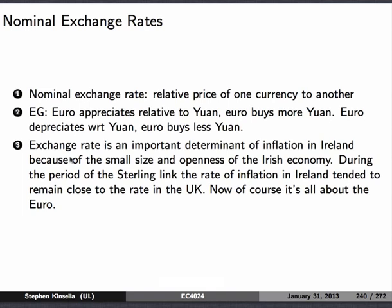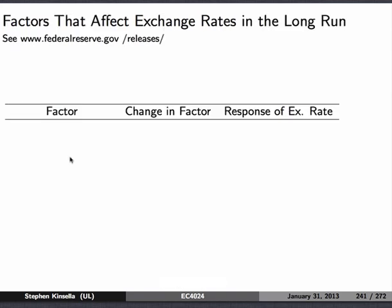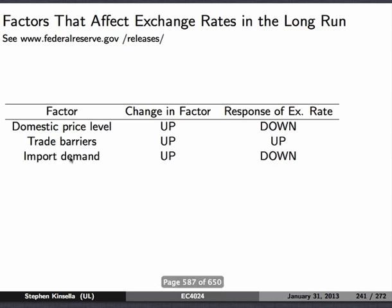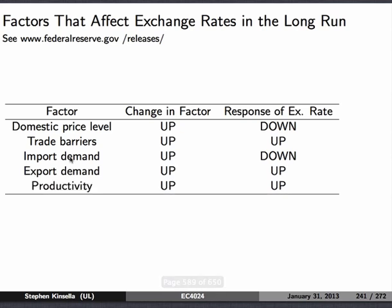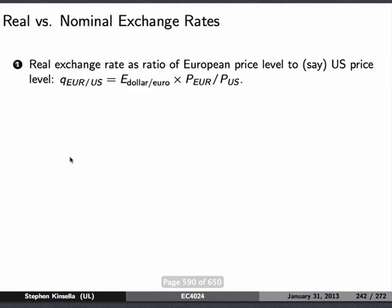Exchange rates are an important determinant of inflation because of the small size and openness of Ireland in particular. During the period of the sterling link, Ireland's inflation rate tended to remain very close to the rate of the UK. What affects the exchange rate in the long run? If the domestic price level goes up, the exchange rate will go down. Increasing trade barriers causes the exchange rate to go up. If import demand goes up, the exchange rate goes down. If export demand goes up, the exchange rate goes up. If productivity goes up, the exchange rate goes up — in the long run, not in the short run.